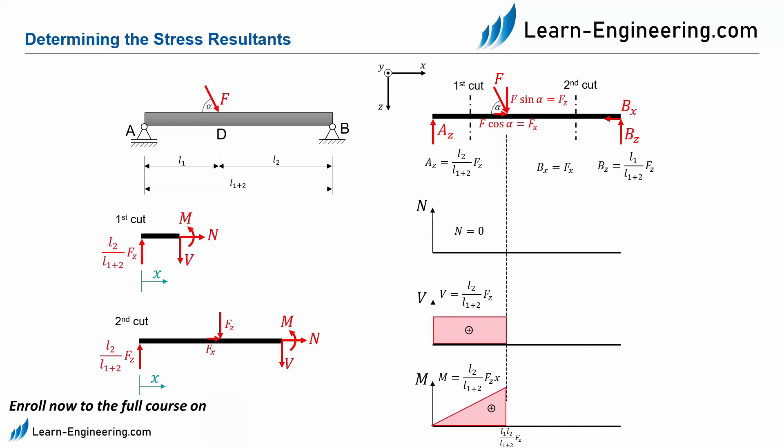At the end of the first section, we can enter L1 for X and thus calculate the amount of moment at point D, which is L1 times L2 divided by L1 plus L2 times FZ.